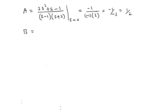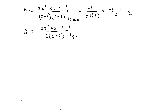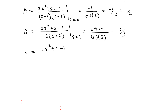To find B: ignore the (s - 1) factor and evaluate (2s² + s - 1) over s(s + 2) at s = 1. You get (2 + 1 - 1) over (1)(3), which is 2 over 3.